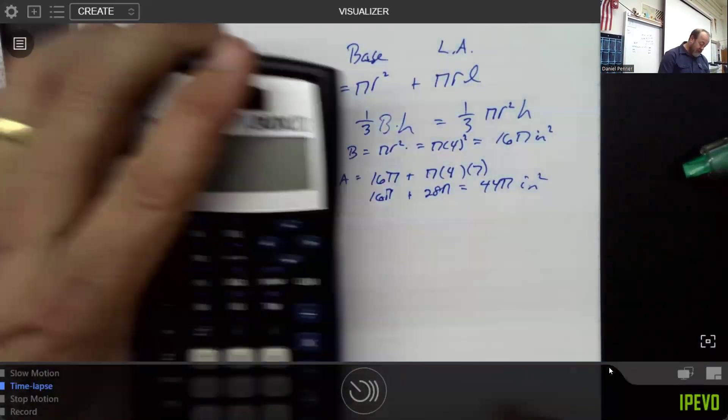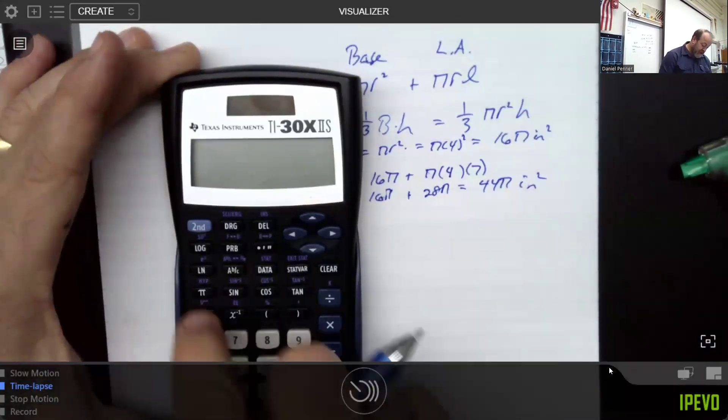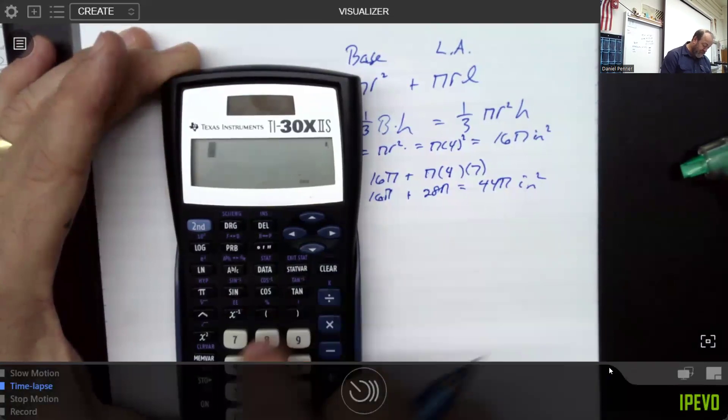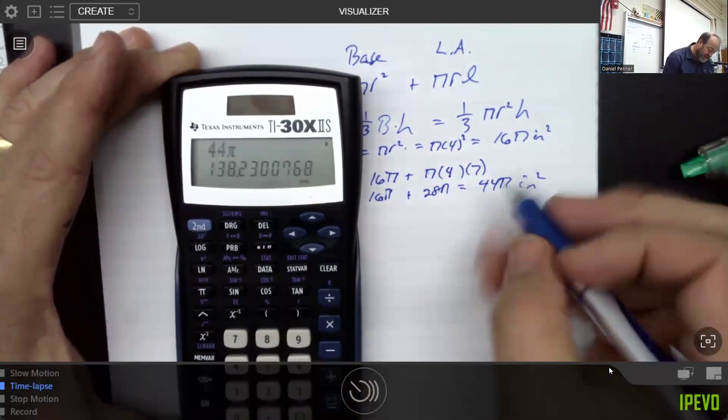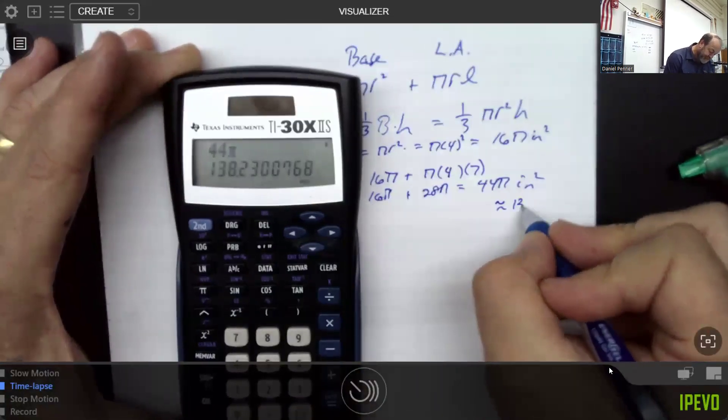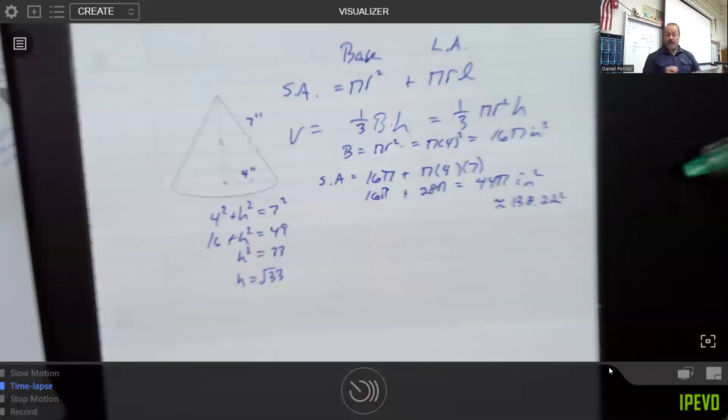And we're at 44 pi square inches, which sometimes is nice to go ahead and get an approximation of that. But here we go. 44 pi would be about 138.2 square inches. That's great. No big deal.